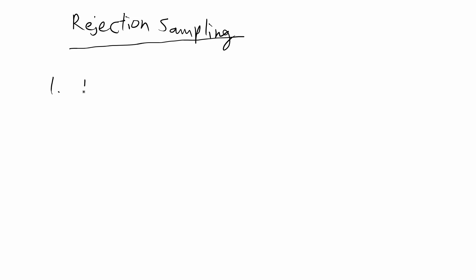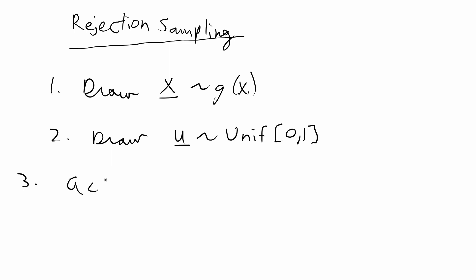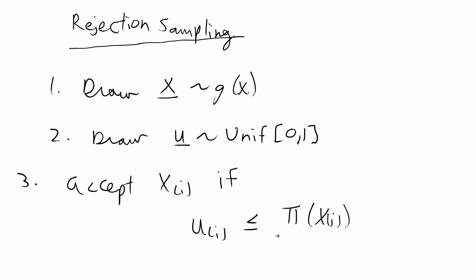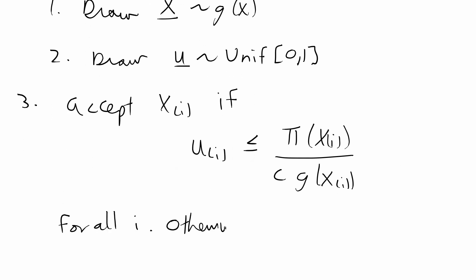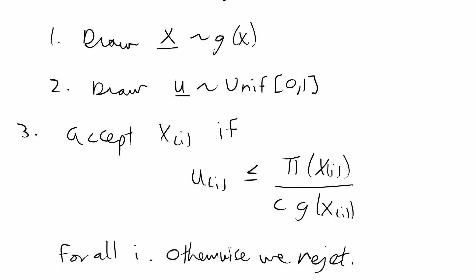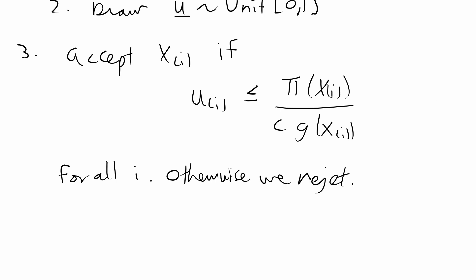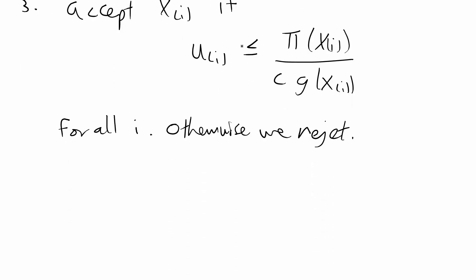Formally, the algorithm works as follows: draw samples x from the proposal distribution g(x); draw random samples u from Uniform(0,1); then accept each sample x_i if u_i ≤ π(x_i) / (c·g(x_i)), and otherwise reject. The accepted random samples of x_i will follow the target distribution π(x) that we were looking for.